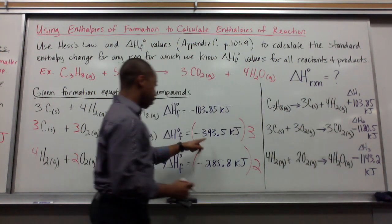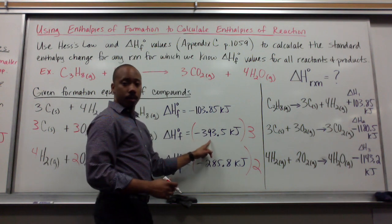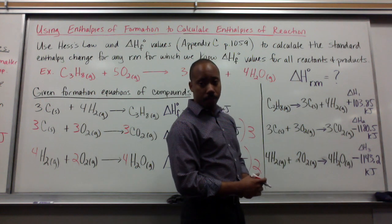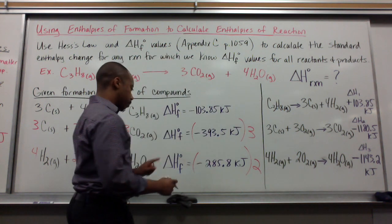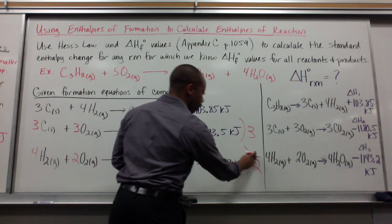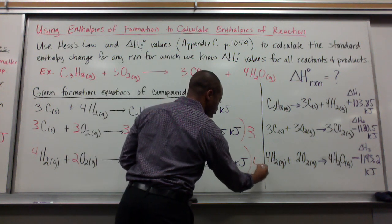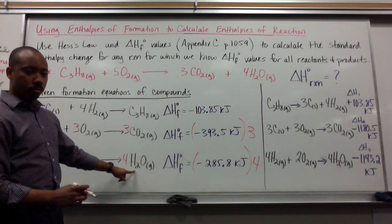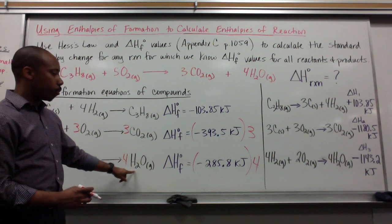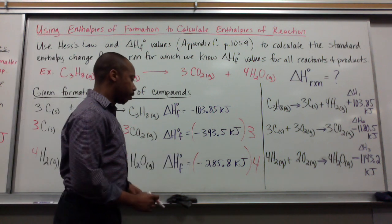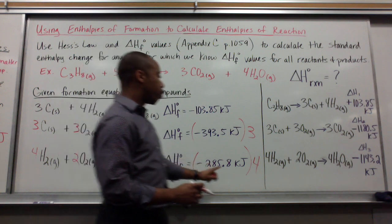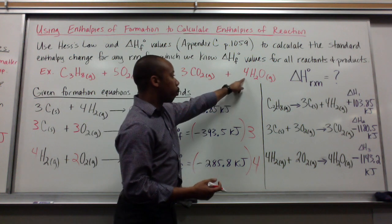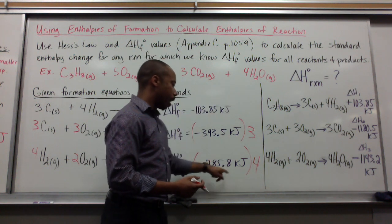All I do is multiply this times three. And I get this number here. Negative 1180.5. Same thing here. Multiply this times four. It should be a four here, not a two. It should be four because I have four moles of water. So four moles of water. Negative 285.8 times four gives me 1143.2. Because we're talking about four moles of water. So we need four times the enthalpy.